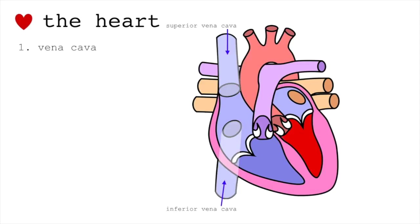Now let's talk about the beautiful heart. First, the blood travels through the vena cava. This represents the deoxygenated blood — the blood from the body, from the capillaries. They exchange gases; they receive CO2 and get rid of oxygen, providing other cells with oxygen. So that's why they've lost oxygen. The deoxygenated blood travels through the superior vena cava and through the inferior vena cava.